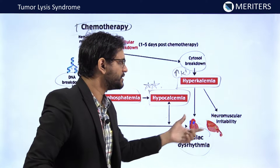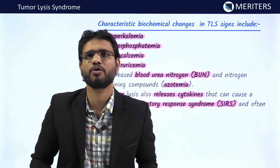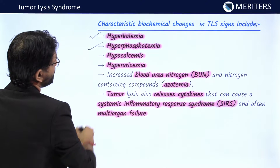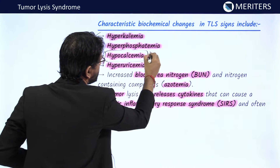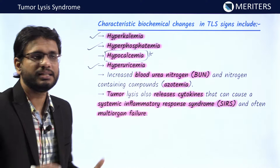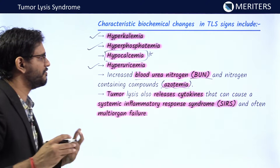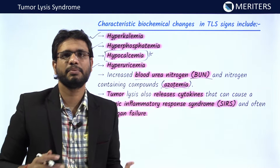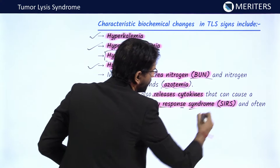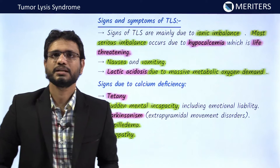Emphasizing the various biochemical changes in TLS: hyperkalemia, hyperphosphatemia, hyperuricemia, and hypocalcemia. These four are very important for exams and have been asked multiple times. There will also be an increase in BUN (blood urea nitrogen) and signs of azotemia — when nitrogen-containing compounds increase in the blood. There can also be release of cytokines causing SIRS (systemic inflammatory response syndrome), and other multi-organ failures can occur due to disruption of homeostasis.